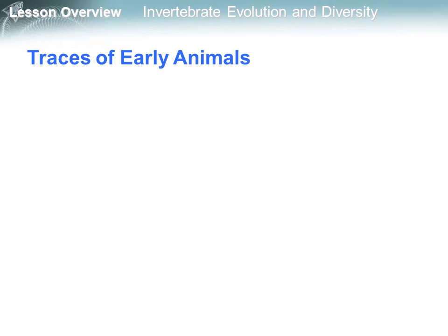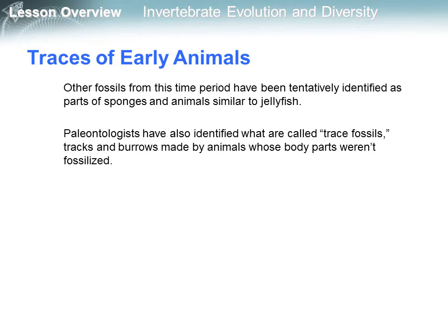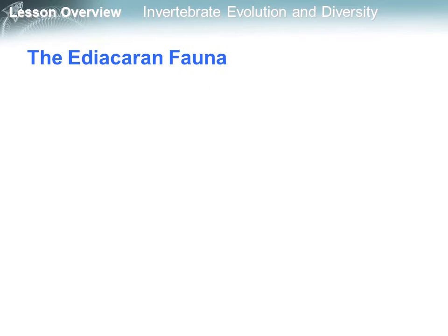Now let's see traces of early animals. Other fossils from this time period have been tentatively identified as parts of sponges and animals similar to jellyfish. Paleontologists have also identified what are called trace fossils — tracks and burrows made by animals whose body parts weren't fossilized.